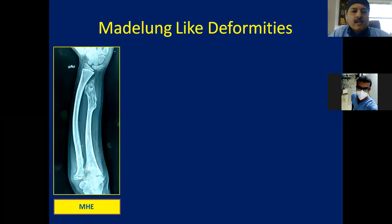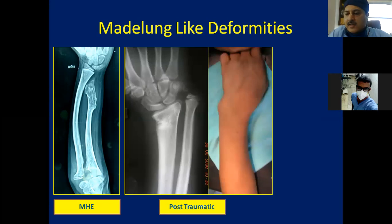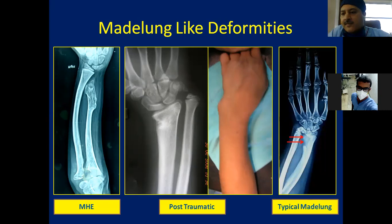One should be aware of Madelung-like deformities producing similar clinical appearance. Multiple hereditary exostoses (MHE) can cause ulnar shortening leading to pseudo-cubitus varus — similar clinical picture but with an osteochondroma along the ulna. Post-traumatic Madelung can occur when the distal radius is fixed with K-wires causing growth arrest of the lateral radial physis, leading to ulnar prominence and radial shortening. In both situations you will not see the pathognomonic cleft on the medial and volar side of the radius typical of true Madelung deformity.